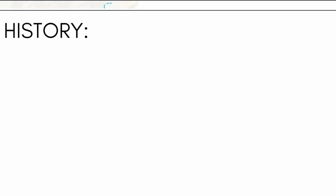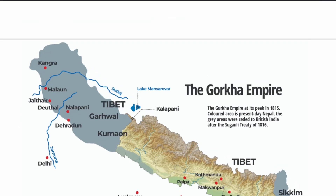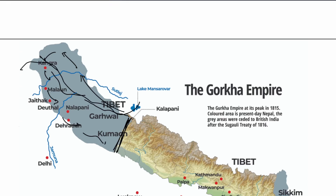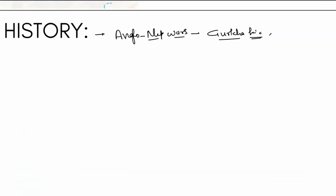There was a Gurkha kingdom established earlier in Nepal. At its peak, the Gurkha empire extended much further — most of that area is now under India, and some under China. Nepal has lost this area over time. Even Sikkim was under the Gurkha empire. Nepal has lost much area in the last 200 years because of the Anglo-Nepalese Wars.